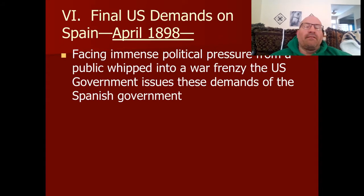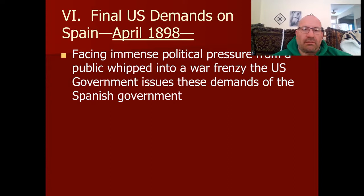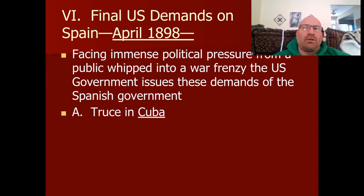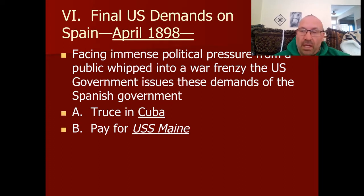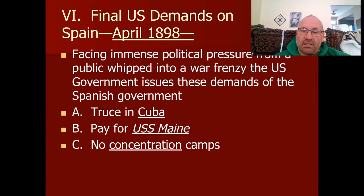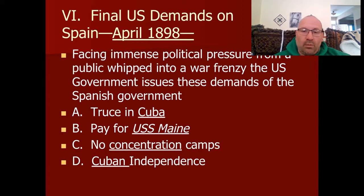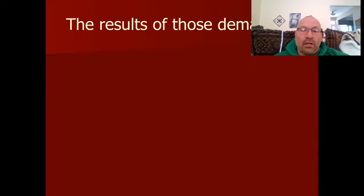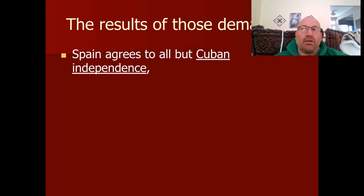President McKinley is facing immense political pressure to do something — the public has been whipped into a war frenzy by the yellow journalists. What McKinley demands of Spain is several things: one, Spain has to agree to a truce in Cuba; two, they have to pay for the USS Maine; three, they have to get rid of the concentration camps; and four, they have to agree to Cuban independence. Believe it or not, Spain agrees to just about all of these — except Cuban independence.